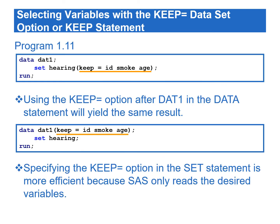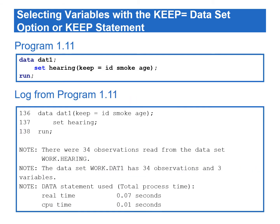Program 1.11 creates a data set by reading the variables id, smoke, and age from the hearing data set. Using the KEEP= option after the output data set name in the DATA statement will yield the same result. However, specifying the KEEP= option in the SET statement is more efficient because SAS only reads the desired variables. To verify whether the DAT1 data set was created correctly, we can check the SAS log. Based on the information from the log, DAT1 contains 34 observations and three variables.